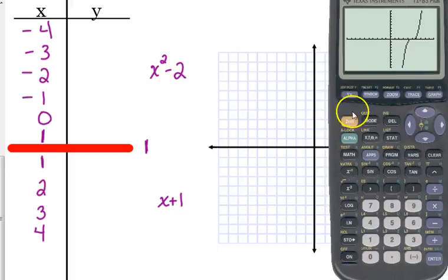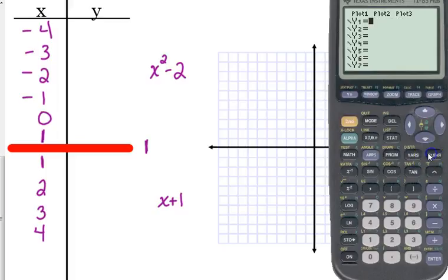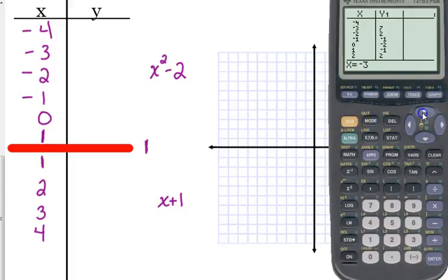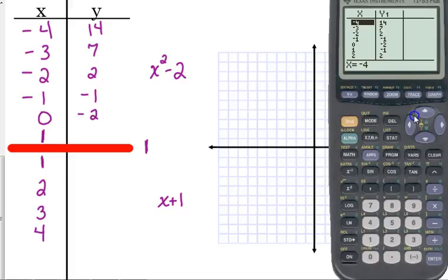So here's what I'm going to do. I'm going to go to my calculator. Instead of like plugging all those numbers in by hand, I'm just going to plug it in to my calculator. x squared minus two. And I'm going to go to the table. And I'm going to get these y values. Negative four, 14. We had already figured that one out, but that confirms it for us. Negative three, seven. Negative two, two. Negative one, negative one. Zero, negative two. And one, negative one.